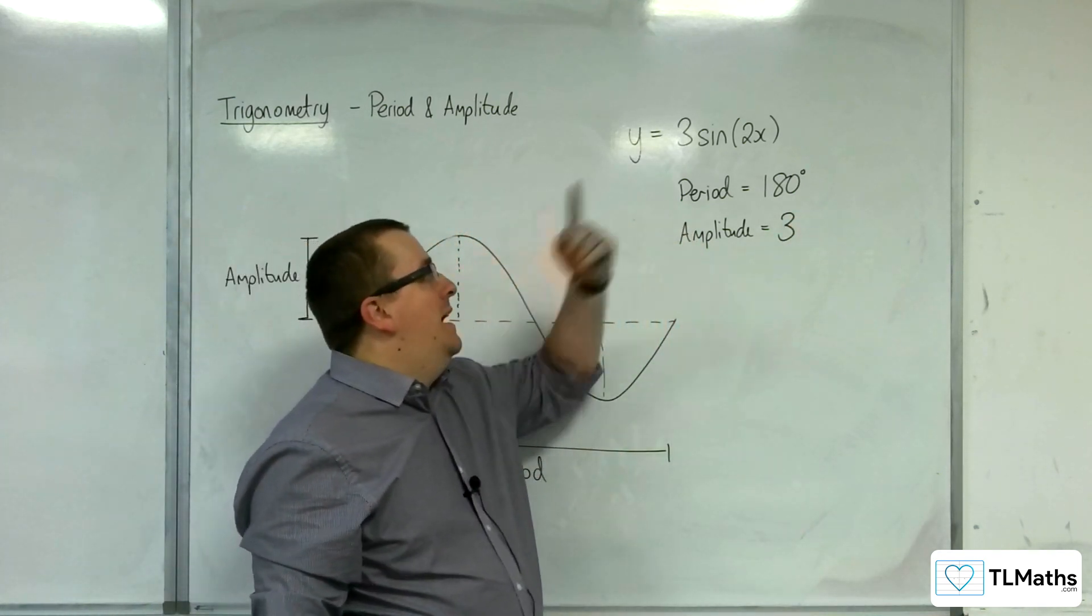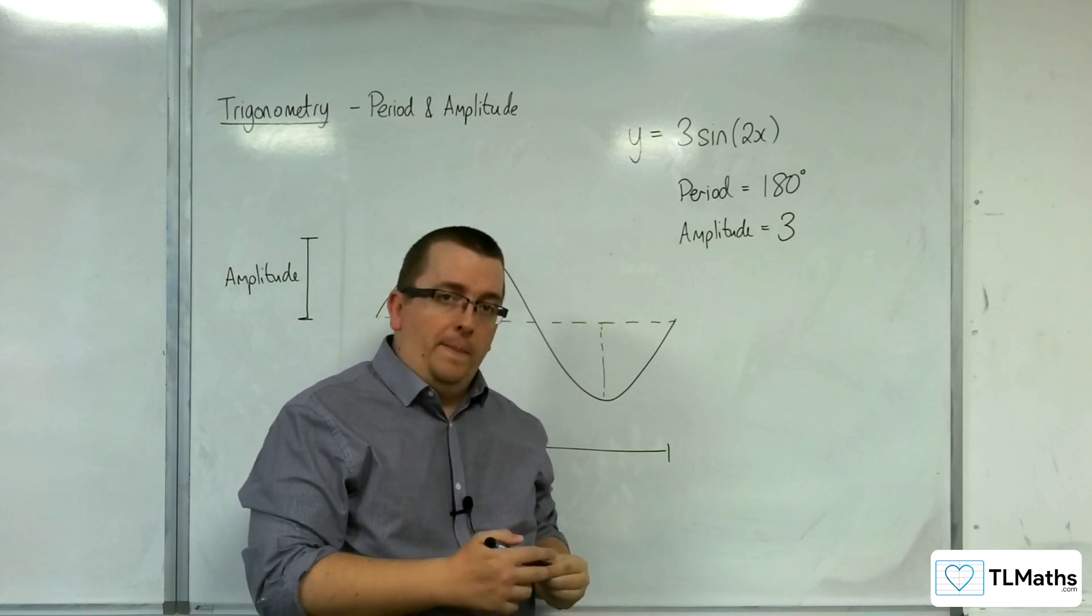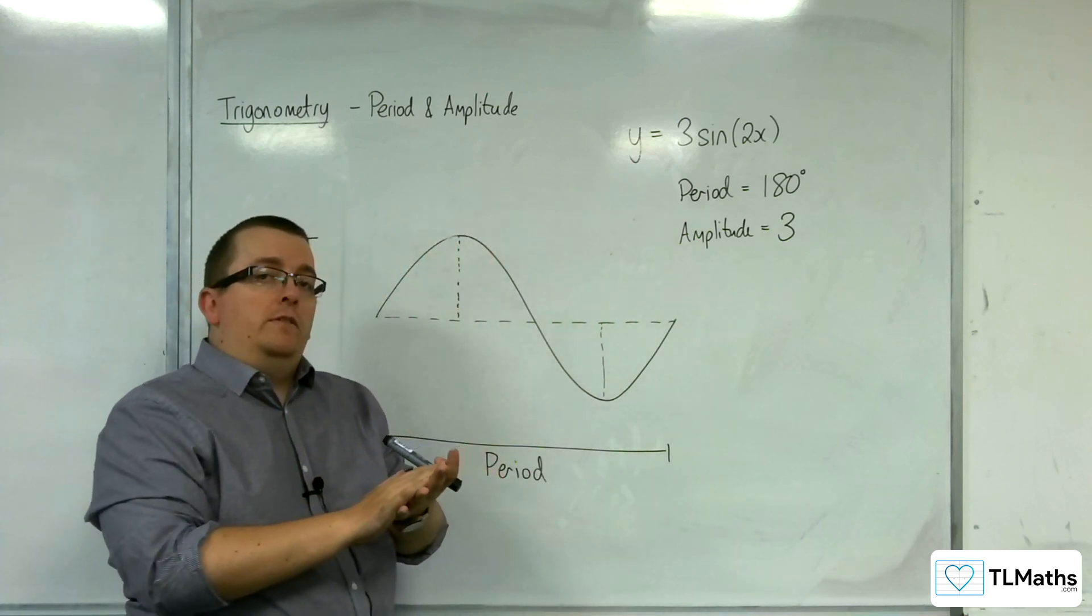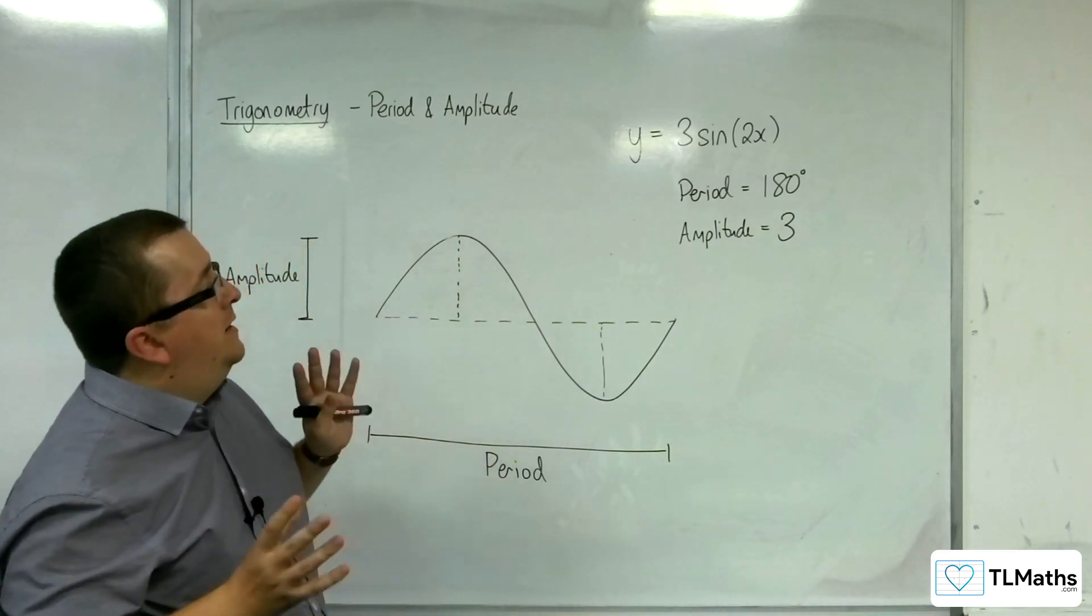It is the magnitude of this number on the front of your trig curve. And this would be the same for cosine as well. Sine or cosine, if you had to identify period and amplitude, you would do it in the same way.